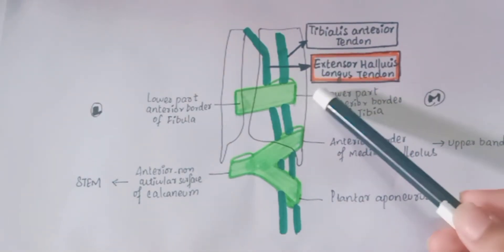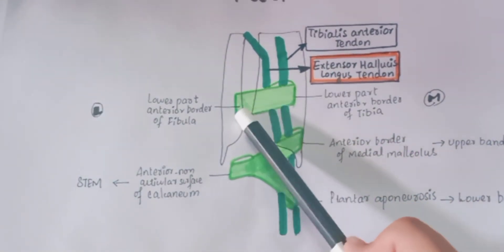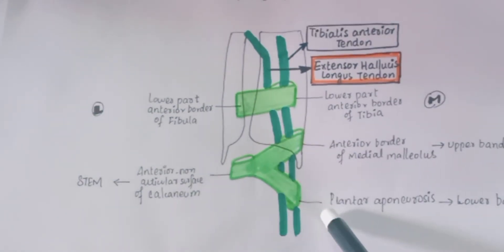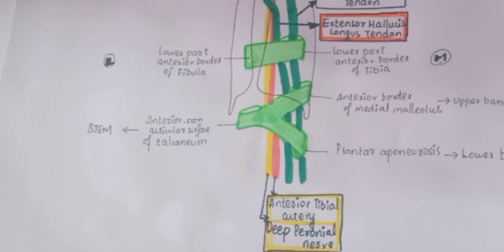The extensor hallucis longus tendon passes deep to the superior extensor retinacula and the lower band, and is enclosed by the upper band. Next come the anterior tibial artery and the deep peroneal nerve. Both structures are not enclosed by any of the retinacula; they pass deep to both the superior and the inferior retinacula.